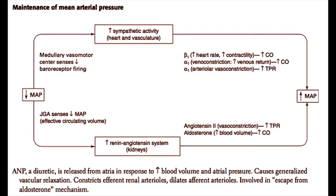When norepinephrine and epinephrine bind to alpha-1 receptors, they cause an increased venous return by venoconstriction in the large veins, which causes an increased cardiac output, and also increased arteriolar vasoconstriction, which leads to an increased total peripheral resistance and an increased blood pressure.